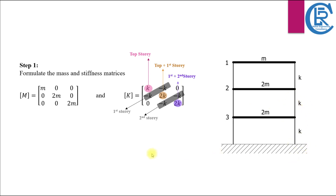Here is an interesting point: you can also formulate these two matrices starting from the ground floor. Both approaches yield the same mode shape, but if we begin from the top story we eliminate the need for an extra normalization step later on. With these matrices in place we are ready to delve deeper into the mode shape vector calculations.